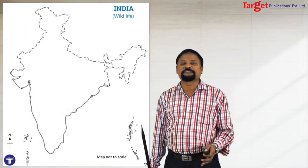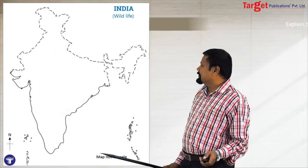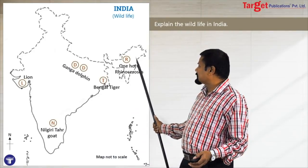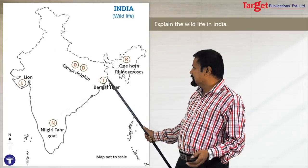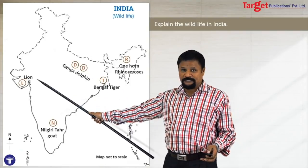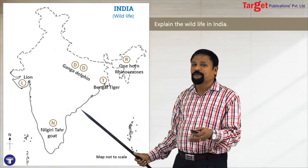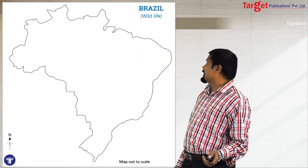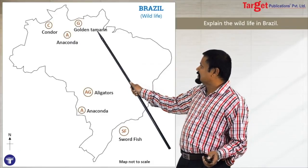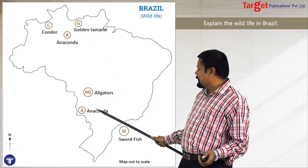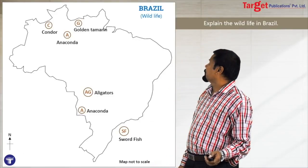For any question about wildlife of India, draw the India stencil and mark some animals — for example, Assam's Kaziranga Wildlife Sanctuary known for the one-horned rhinoceros, Ganga dolphin, Gujarat's Gir Forest known for lions, Bengal tiger, and Nilgiri tahr. Similarly, for Brazilian wildlife, show the condor bird, golden tamarin, anaconda, alligators, and swordfish — marking a few animal locations.